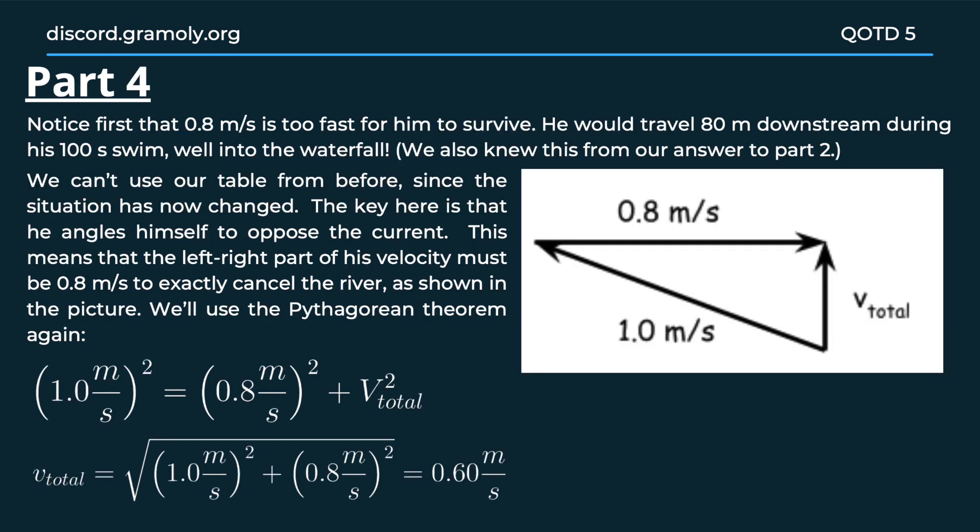Now finally moving to the last part, which is slightly more challenging. The swimmer has decided to change his strategy and move at an angle to the shore. His velocity is still 1 meter per second, but the component of that that is in the direction opposite to the current would be cancelled out by the current.